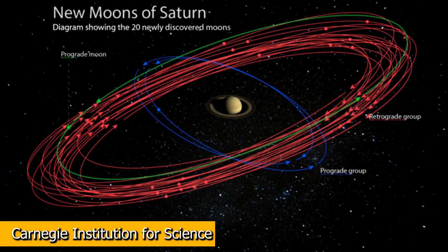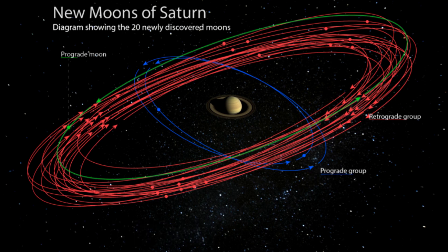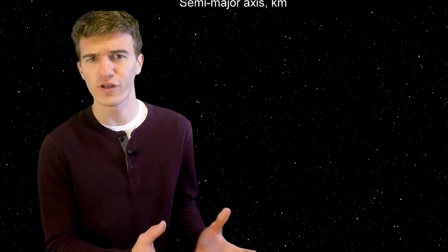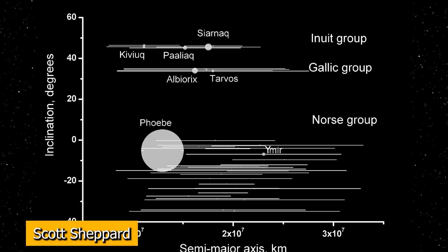It turns out scientists believe that these moons, or a lot of these combinations of smaller moons, could have potentially been one larger moon in the past. As of right now, there are 46 moons in the Norse category. So out of the 82 moons that are orbiting around Saturn, over half of them fall within this orbital category, meaning that they're all really close to one another.